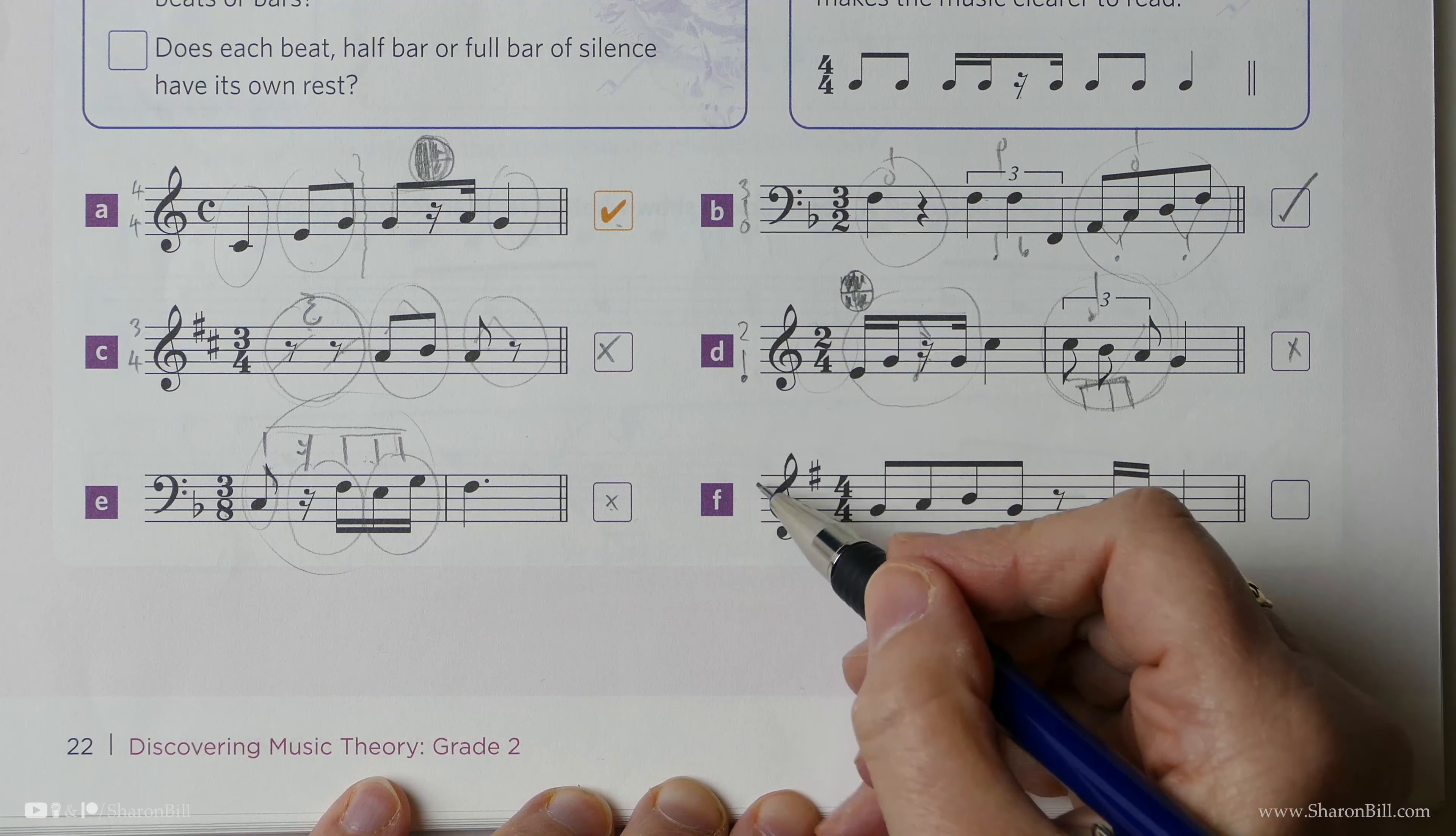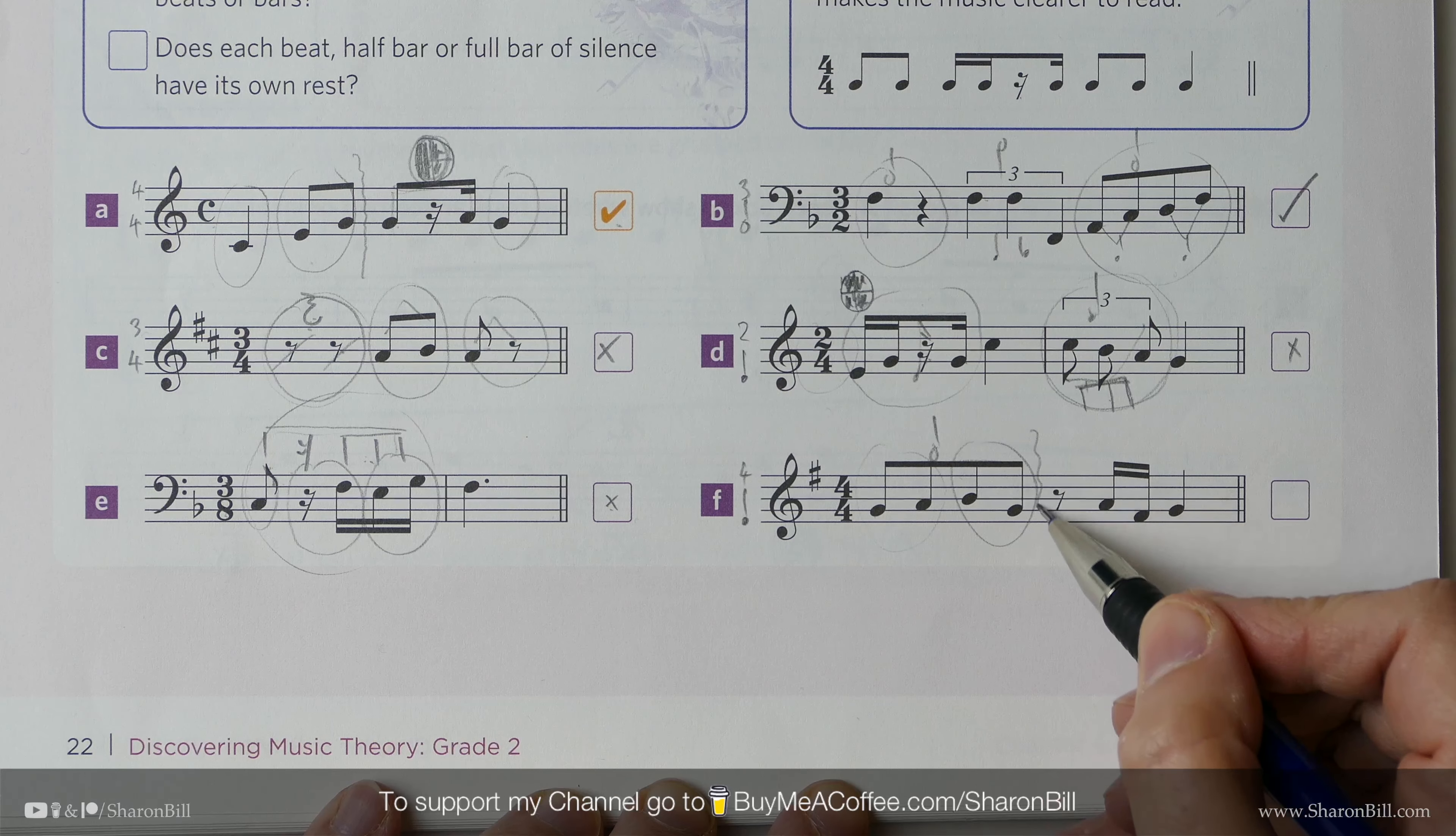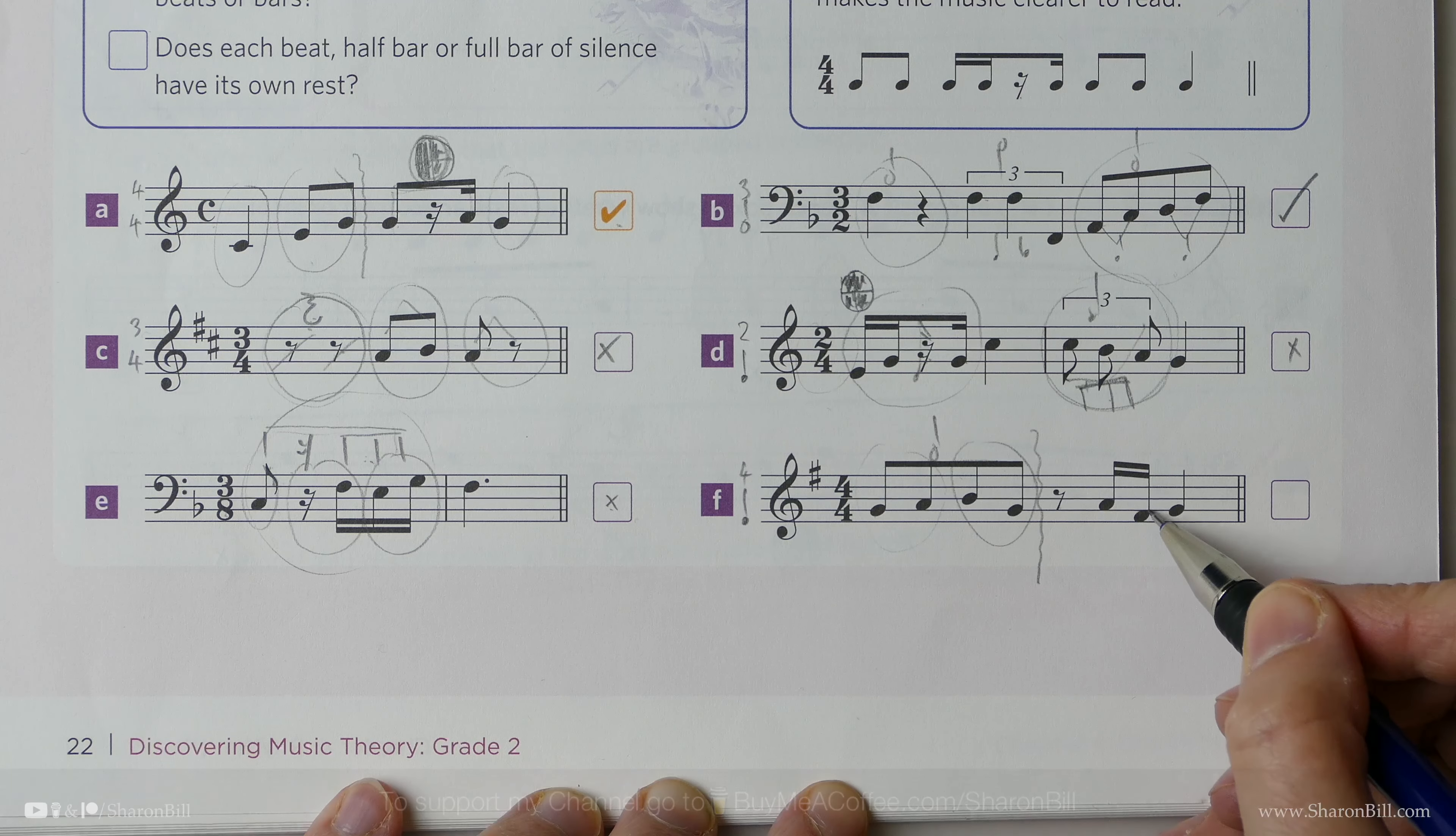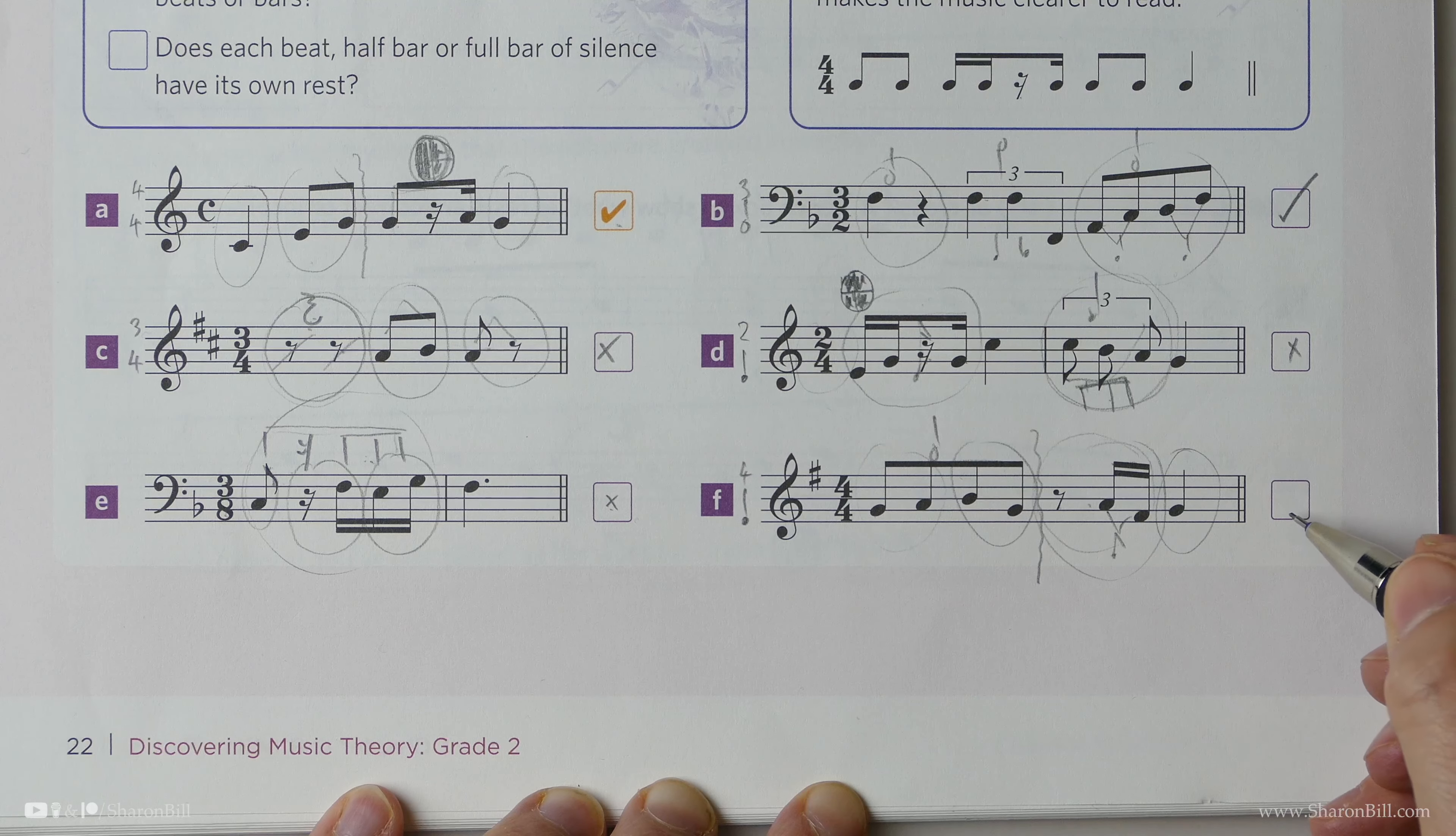Now here, we have 4 crotchet beats per bar, there is 1 crotchet beat, there is 2 crotchet beats, and they are properly beamed together to show a minimum beat's worth. We've not gone over the halfway point of the bar, so that's correct, we're okay there. And then we have quaver, and 2 semiquavers, which gives us another quaver, there's our crotchet beat, and so those are beamed to show that, and then there is the final beat, so that one is correct.